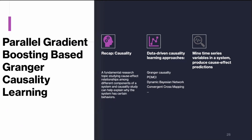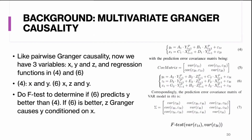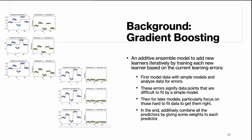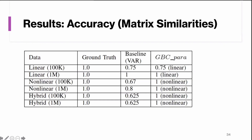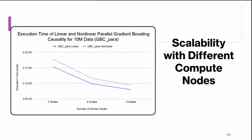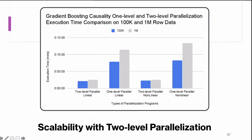There's another part of my dissertation: parallel gradient boosting-based Granger causality learning. We combine Granger causality and gradient boosting together to make a parallel gradient boosting-based Granger causality learning that outperforms the original Granger causality method, has good scalability, and uses two-level parallelization.